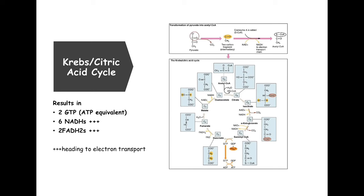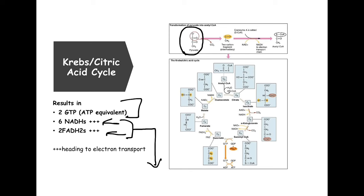If oxygen is present, the next step will proceed in our mitochondria. The pyruvate from glycolysis gets stripped of one carbon; oxygen binds to it forming carbon dioxide that we breathe out. In the process of going from pyruvate to acetyl-CoA, a NAD is reduced — an electron carrier picks up the released electrons and shuttles them to the electron transport chain.